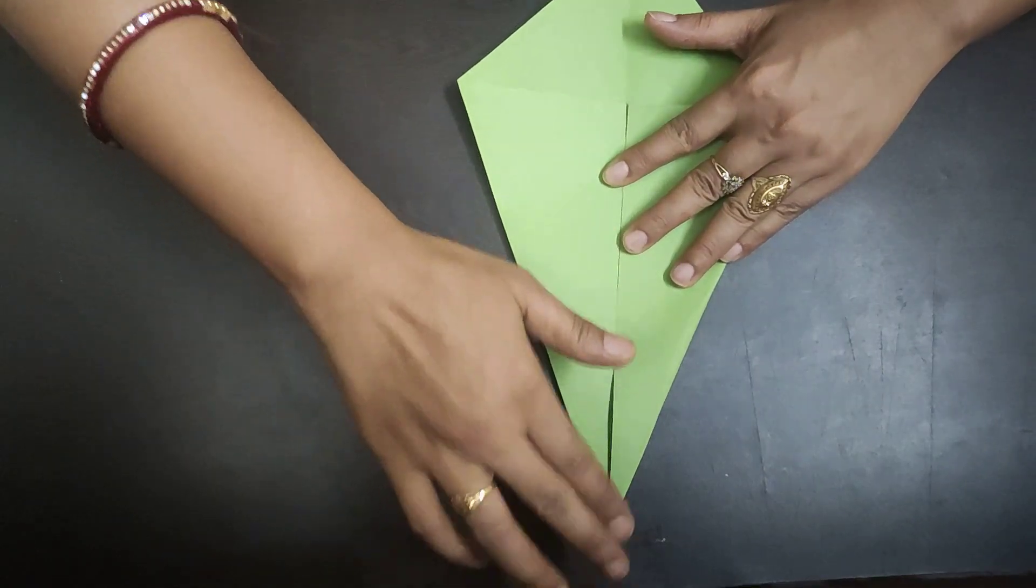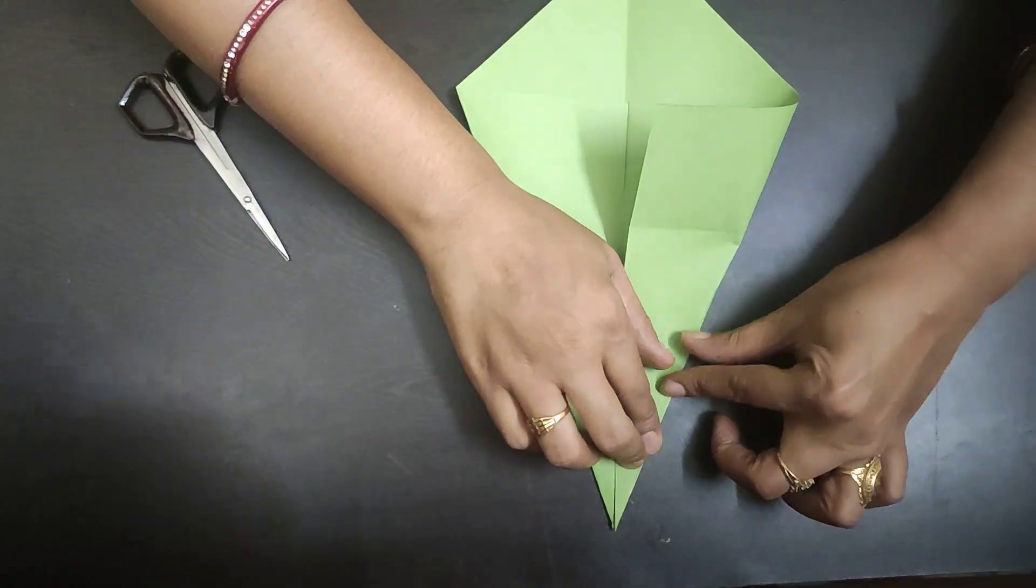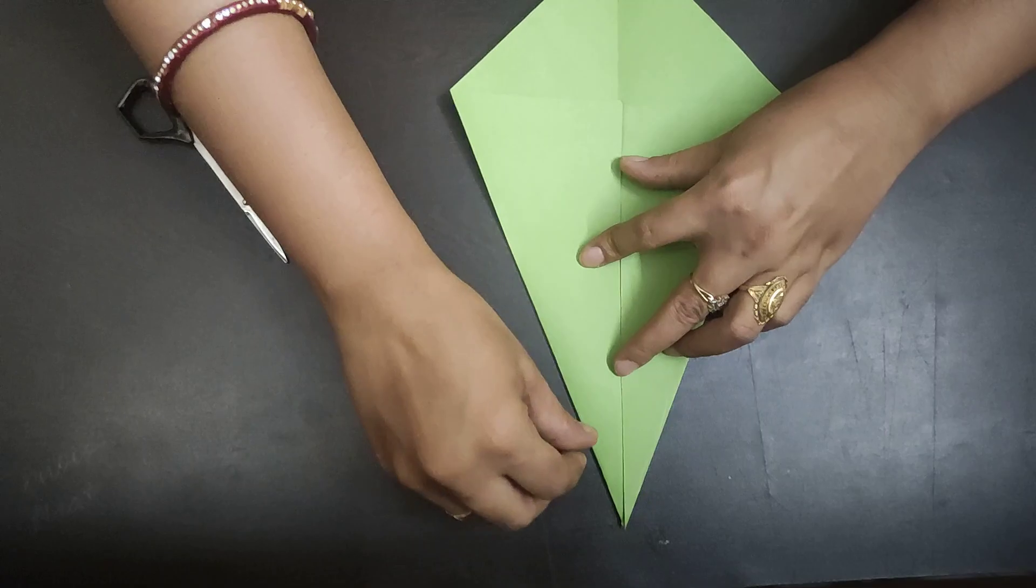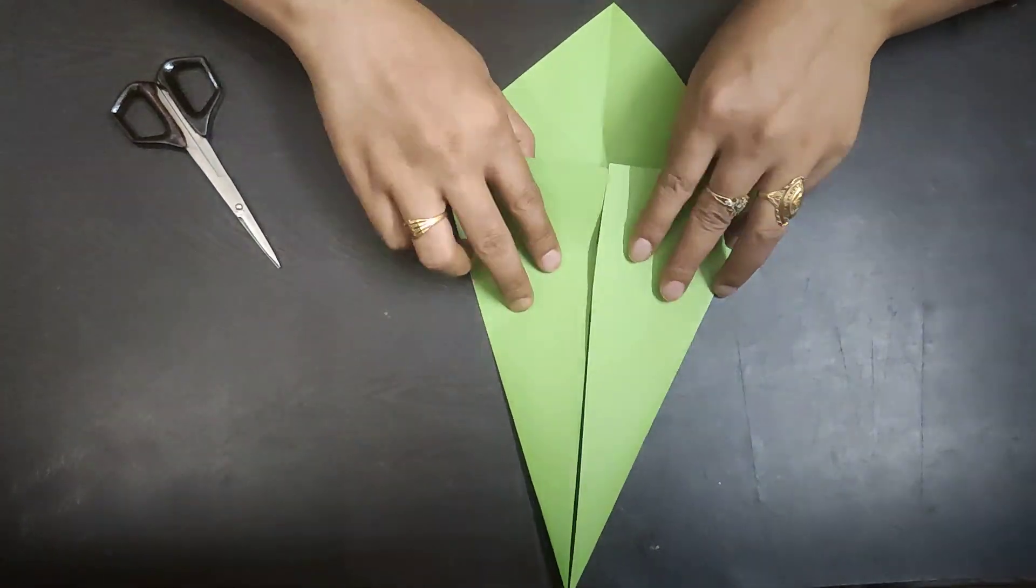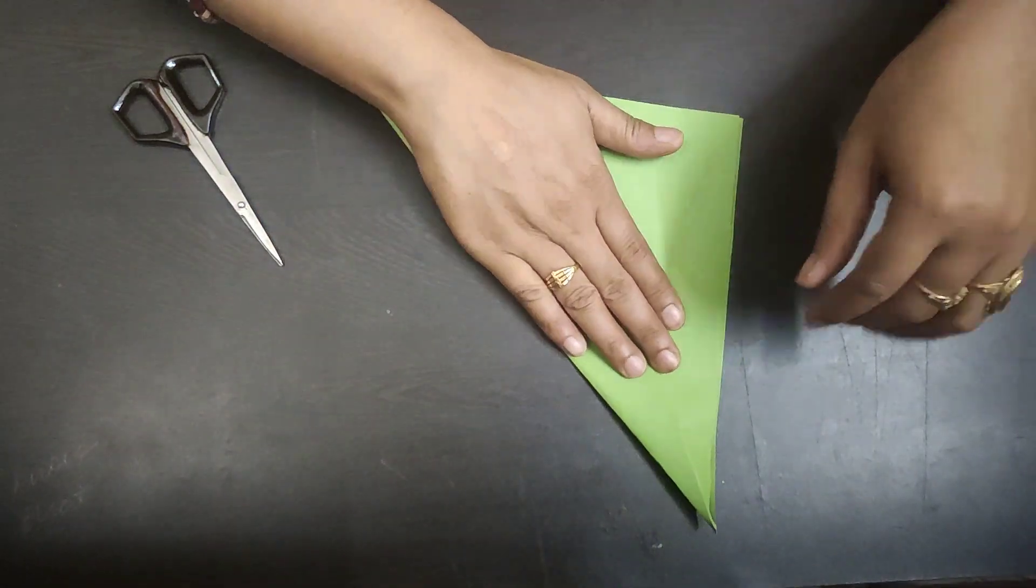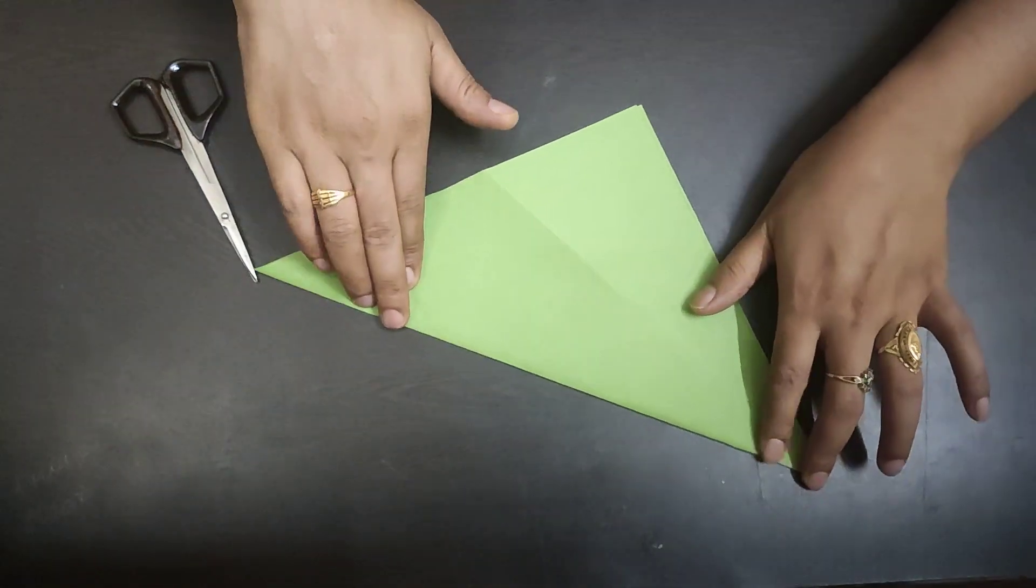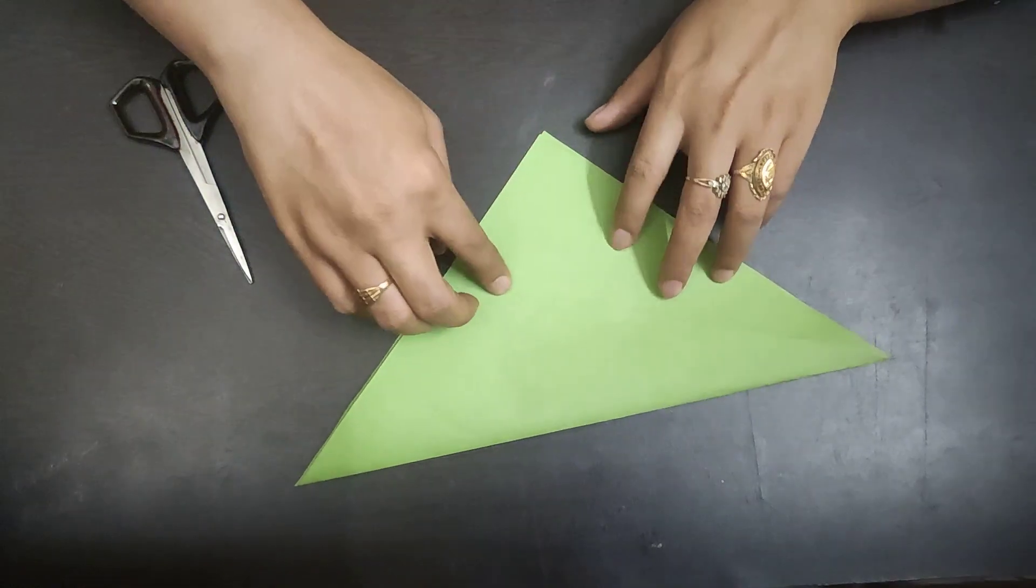One more triangle and press it to make the top line. As you have seen, we have made two triangles. Now open it and make one triangle again. You have seen this line.